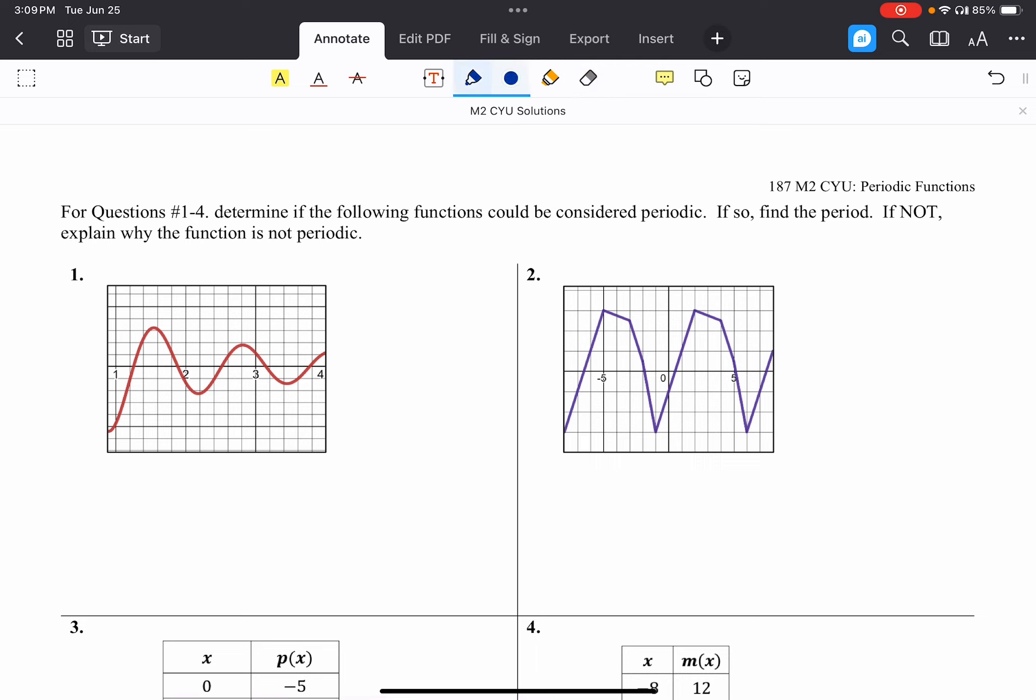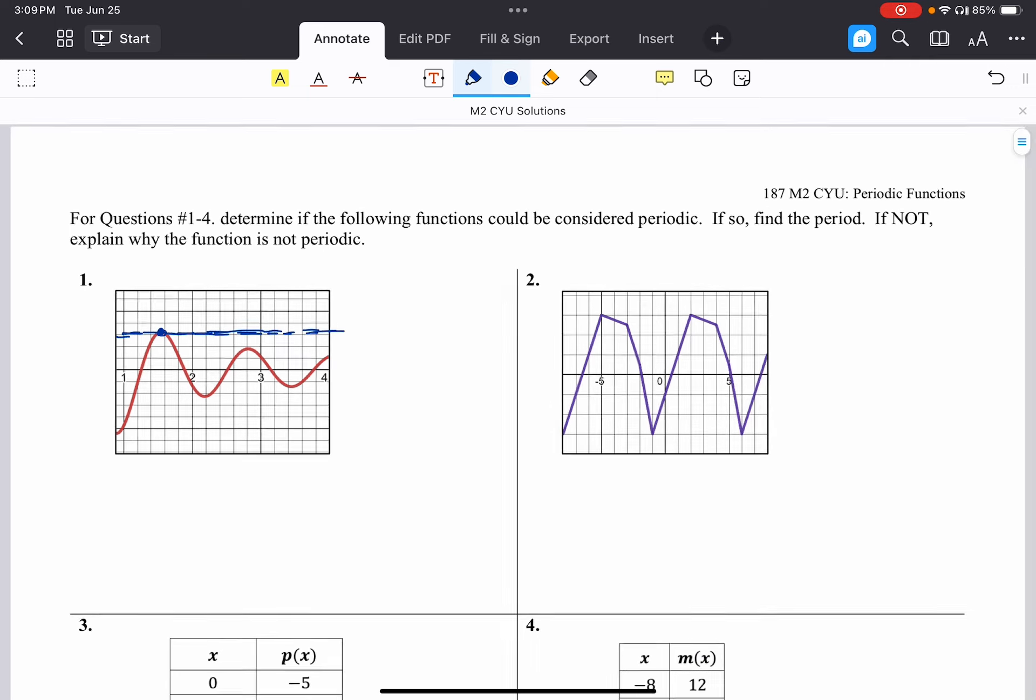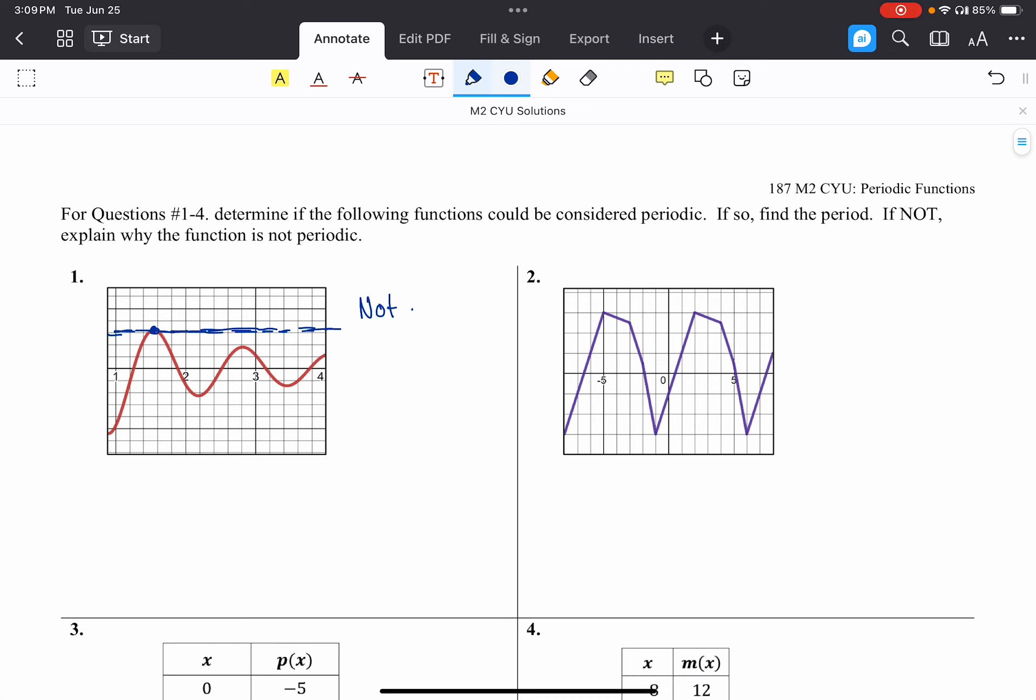If I look at this very first problem, I'll notice that right here, I have an output value close to three, but nowhere else on this function do I have an output value close to that. And so this is not periodic, and we would say it's not periodic because these output values aren't repeating.